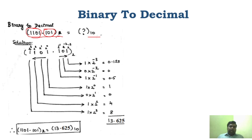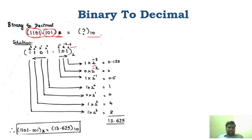You can see this is base 2. If it is base 2, you write the power of base 2. If it is base 8, you write the power of base 8. If it is base 16, you write the power of base 16. Now we are doing it for binary to decimal. So: 1 into 2 to the power of minus 3, 0 into 2 to the power of minus 2, 1 into 2 to the power of minus 1, 1 into 2 to the power of 0, 0 into 2 to the power of 1, and 2 to the power of 3 and 2 to the power of 4.